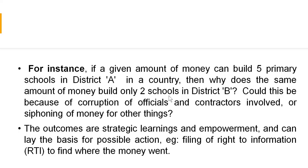Here is an example for the comparative analysis model: if the same amount of money can build five family schools in district A but only two schools in district B, could this be because of corruption of officials and contractors, or siphoning of money for other things? This is one example of comparing good and bad governance outcomes. The outcome involves strategic learning and empowerment, and it can lay the basis for possible action — for example, filing a Right to Information (RTI) request to find out where the money went.